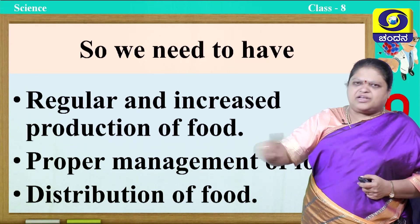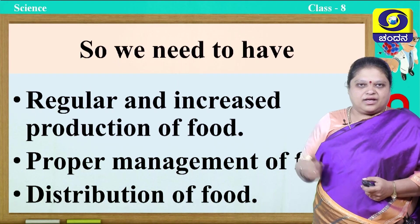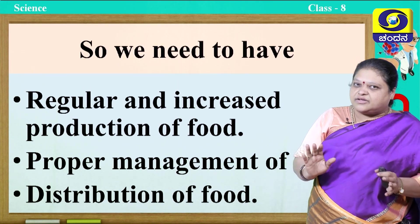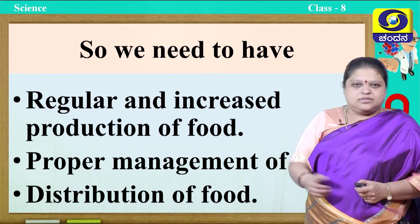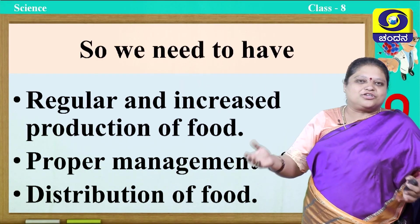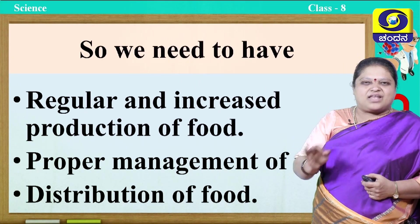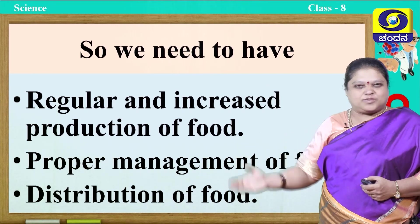We have to regularly produce food — that means grow them. Just that is not enough; every day the population is increasing, so you have to increase the production of food also. Next, just production is not enough — they should not get spoiled. We require it for the entire year, so proper management of food is very important. Finally, another big challenge is distribution of food material — you should have a very well-advanced transport system. All these involve various processes.